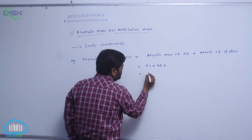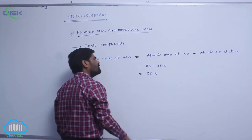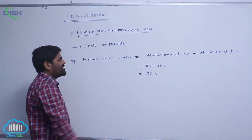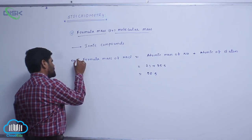So therefore, 58.5. This particular mass is known as formula mass. This is the first example.